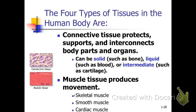The tissues come in four basic types. We've got connective tissue, which includes things like bone, blood, and cartilage. We'll be looking at each of these under the microscope, learning how each looks and where they're found in the body.